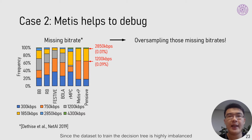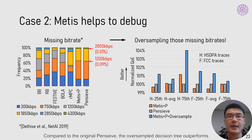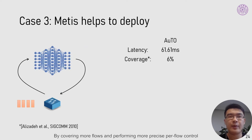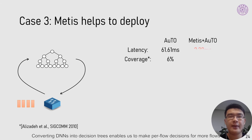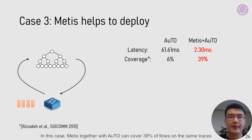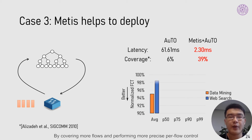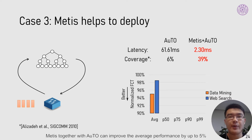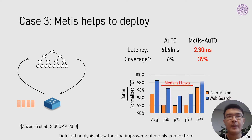Since the dataset to train the decision tree is highly imbalanced, we oversample the missing bitrates during conversion. Compared to the original Pencil, the oversampled decision tree outperforms by about 1% on average on two sets of traces. We further show how Metis helps deployment in the case of Auto. The per-flow decision latency of Auto is 62ms on average. Converting the DNN to a decision tree enables per-flow decisions for more flows with shorter latency. Metis together with Auto can cover 39% of flows, improving average performance by up to 5%, driven by optimization of newly covered median flows.